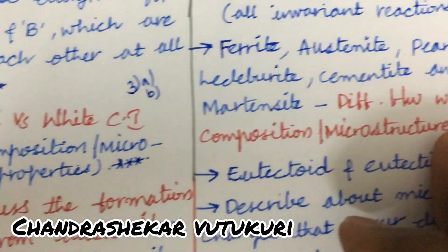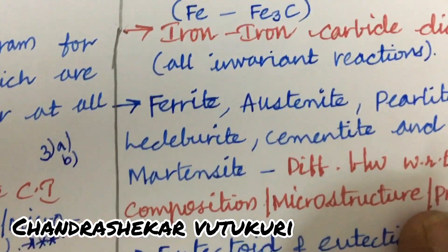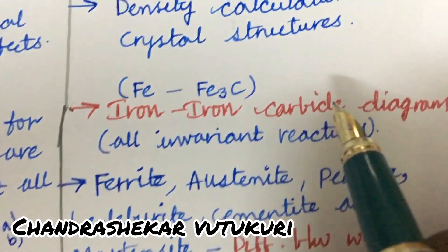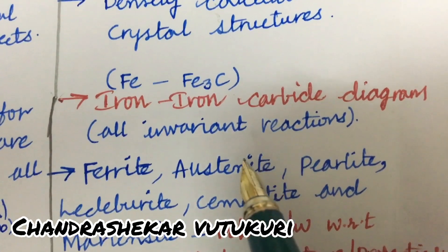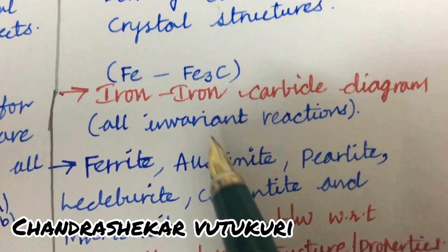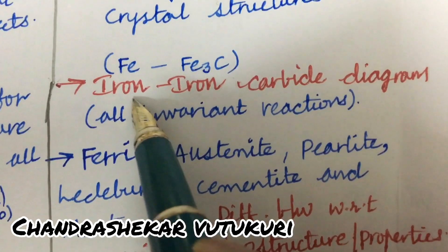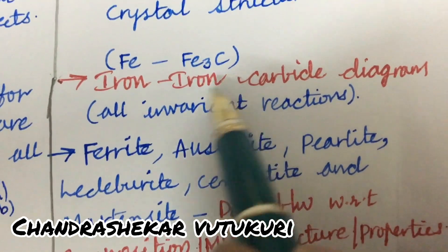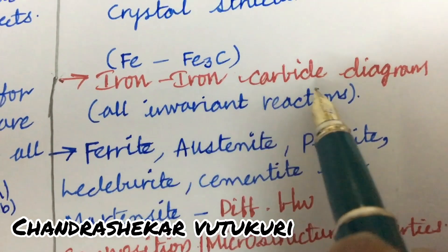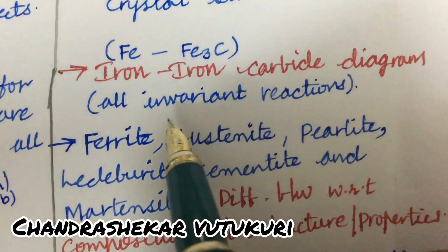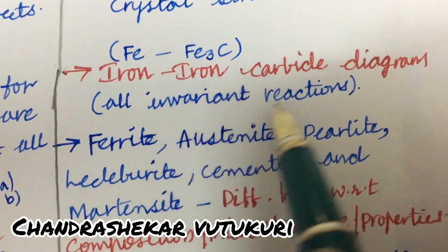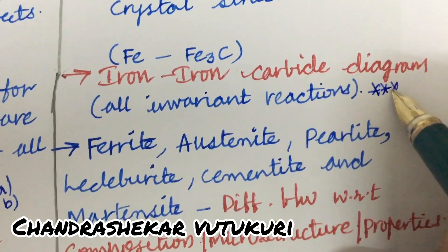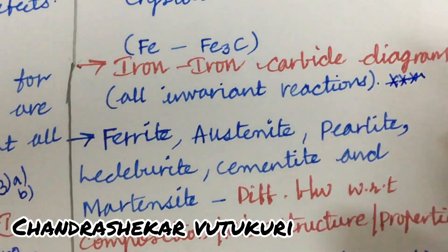Sometimes from Unit 2 you are going to get only one and a half questions, as per the analysis done by me taking into consideration the previous year question papers. Also work out and draw the Fe-Fe₃C (iron-iron carbide) diagram and all invariant reactions — this is said to be a very very important gunshot question.